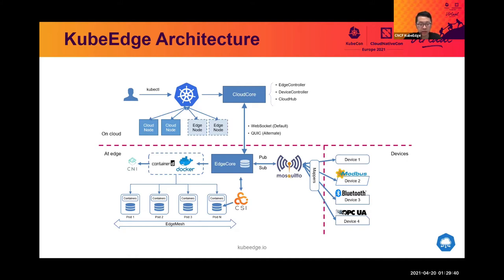On the edge, we have the all-in-one component, the edge core, which provides node-level autonomy functionality, and it is optimized for low-resource hardware. To better integrate with IoT devices and different protocols used in the industry, KubeEdge provides the extensibility framework — the device mapper — to simplify integration with different protocols.